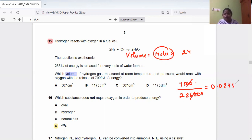So 0.0245 times 24, which is the volume of gas at RTP. So 0.0245 times 24 equals 0.587 decimeter cube.